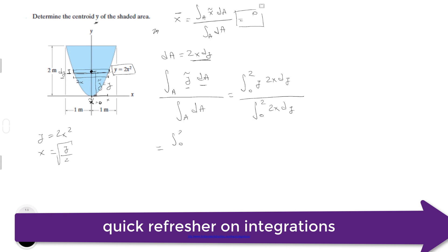And you're going to get that the integral from 0 to 2 of y times 2 times the square root of y over 2, dy, all over the integral from 0 to 2 of 2 square root of y over square root of 2, dy. Now we're going to just start simplifying this equation.